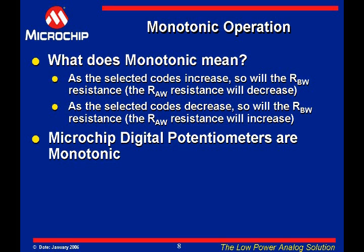Figure 211, shown previously on slide 5, shows that as the wiper setting is increased, the RBW resistance increases. There are no points where the resistance decreases for an increase in the wiper setting. This is an important characteristic, especially in cases where the INL error becomes larger than 1 LSB, as shown in Figure 2.9 on slide 6.